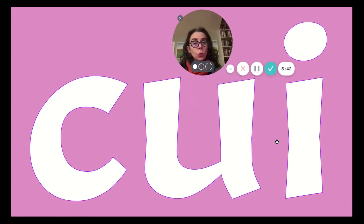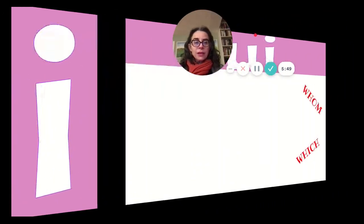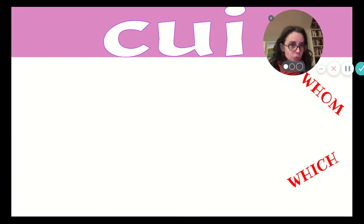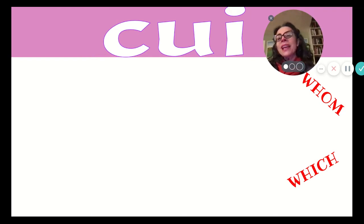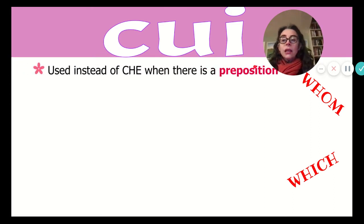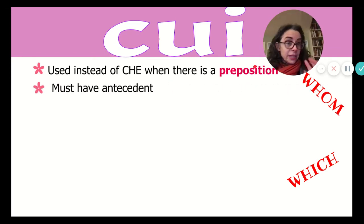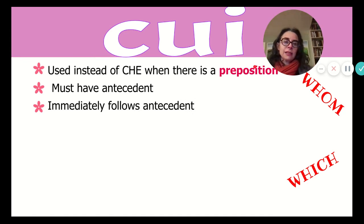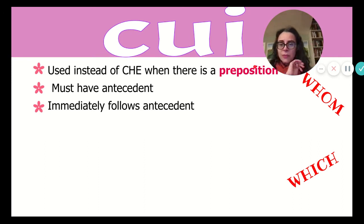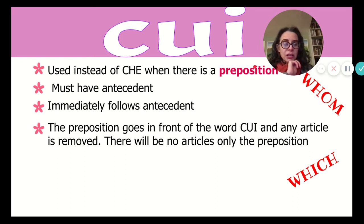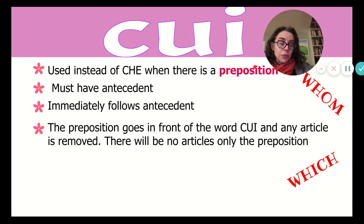Cui is the other big one — spelled with a C, pronounced 'cui.' It is used instead of che when there is a preposition. It must have an antecedent just like che and immediately follows the antecedent. And when you have cui with a preposition, there are no articles — the articles are removed. Remember that.